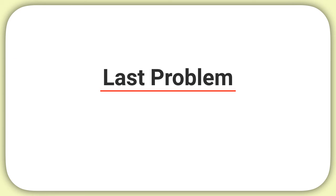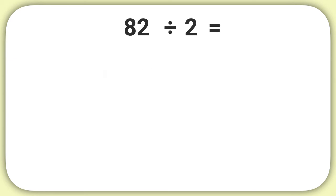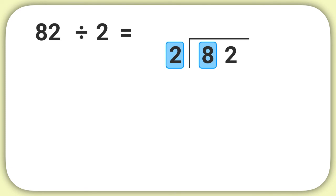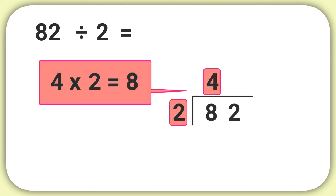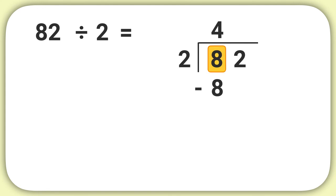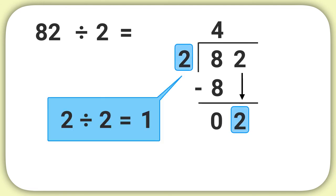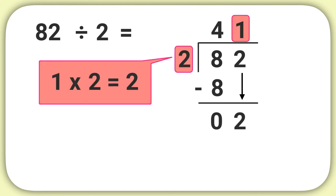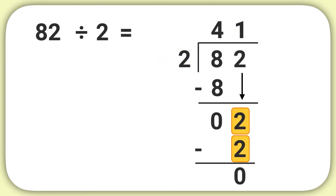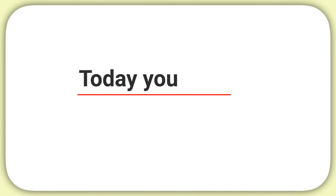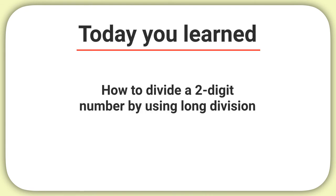Now here is your last problem for today. What does 82 divided by 2 equal? Divide 8 by 2 to get 4, then write that 4 into your problem. Multiply 4 times 2 to get 8, write minus 8, and subtract 8 minus 8 to get 0. Bring down the next digit and repeat. Divide 2 by 2, which equals 1. Write down that 1, then multiply 1 times 2 equals 2, so write minus 2 into your problem. Then subtract: 2 minus 2 is 0, and we're done. 82 divided by 2 equals 41.